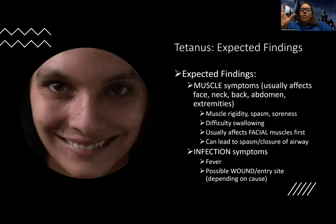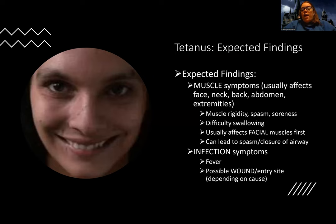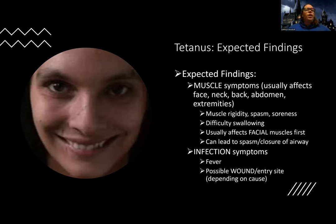Tetanus can also affect the muscles of the neck, the back, the abdomen, and the extremities. The big thing we're concerned about is the airway closing. But I'm also concerned about constantly rigid muscles — imagine doing a squat and staying in that position forever; that's how the body feels. When muscles are in a state of constant tension, they start to break down, similar to intense exercise but forced. So we can have a lot of muscle breakdown. First I have airway closure, then muscle breakdown, and then there's the fact that it just hurts — this is a very painful disease process.